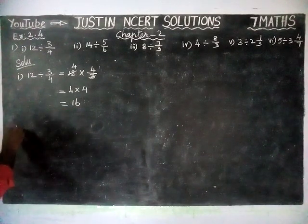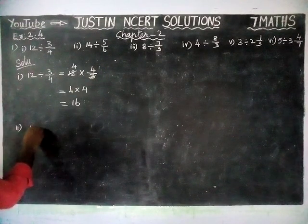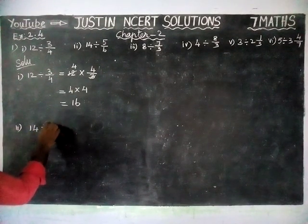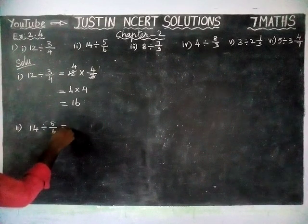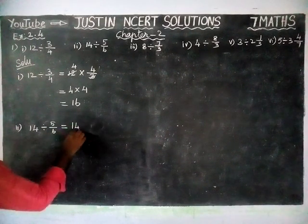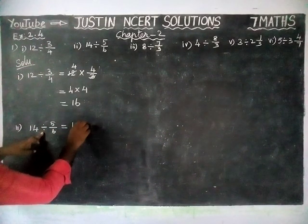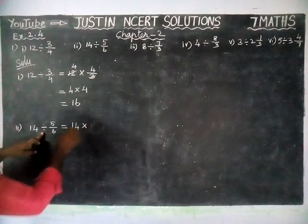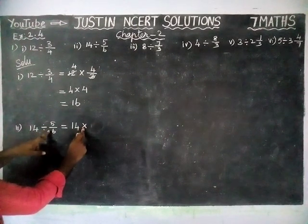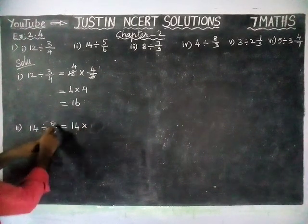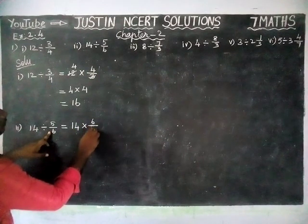Next, second Roman numeral: 14 divided by 5/6 is equal to 14 multiplied by the reciprocal. We are writing the division symbol as multiplication symbol. Now we have to find the reciprocal for 5/6, that is 6/5.